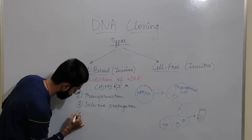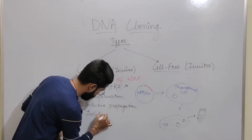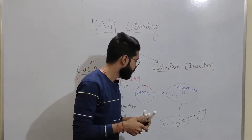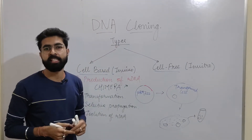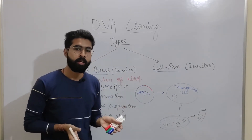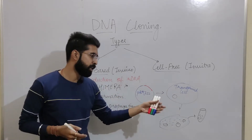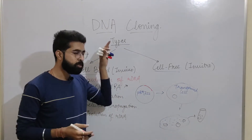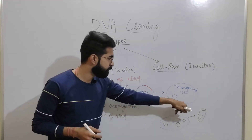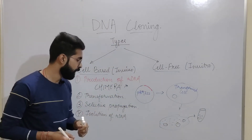The last step is isolation of the recombinant DNA. This rDNA, which has been cloned into cells with a large number of copies produced by autonomously replicating vectors, is isolated by various methods — we harvest the cells and extract the copies. So to summarize cell-based cloning: first, production of recombinant DNA; second, transformation; third, selective propagation; and fourth, isolation of rDNA.